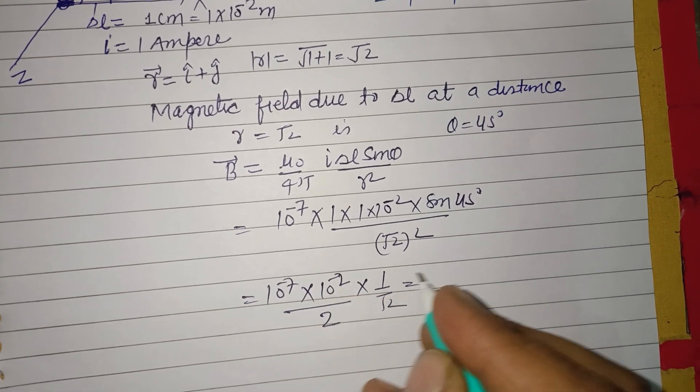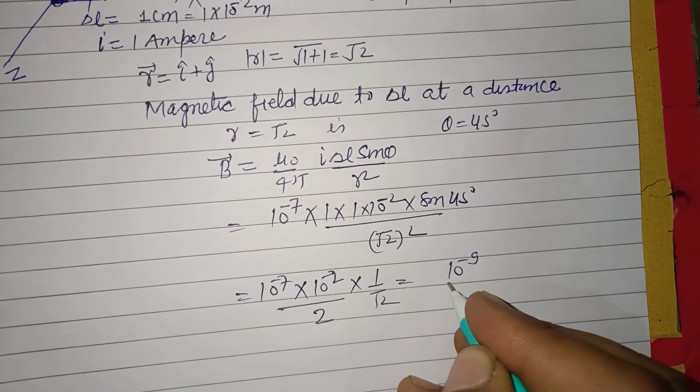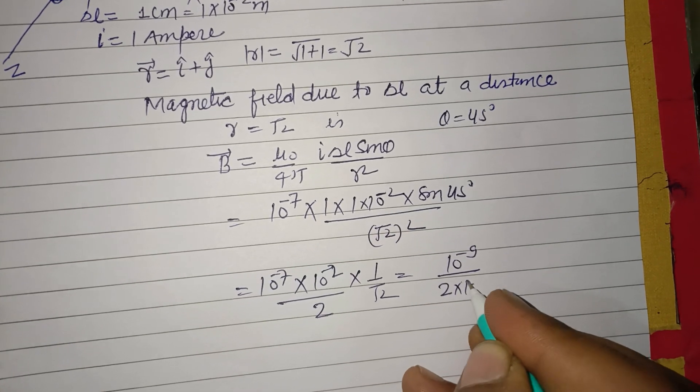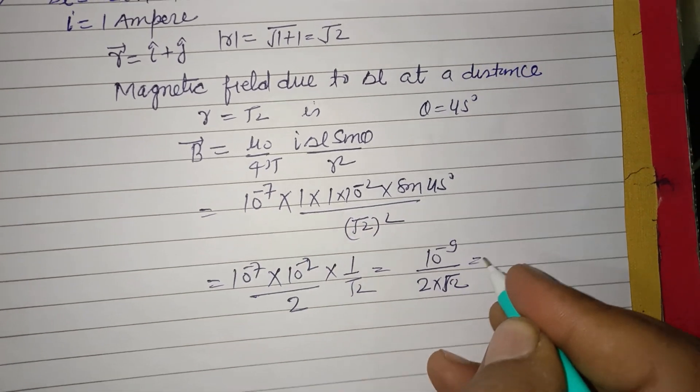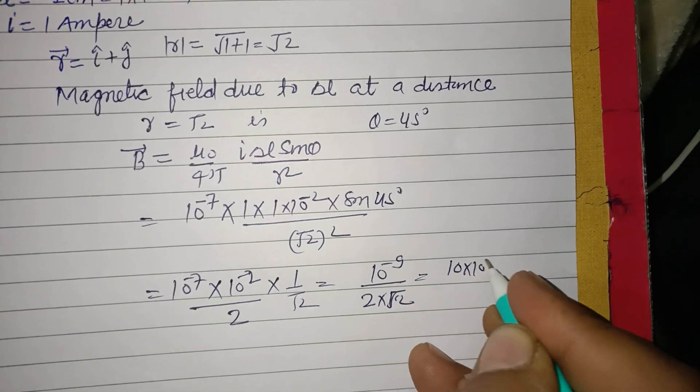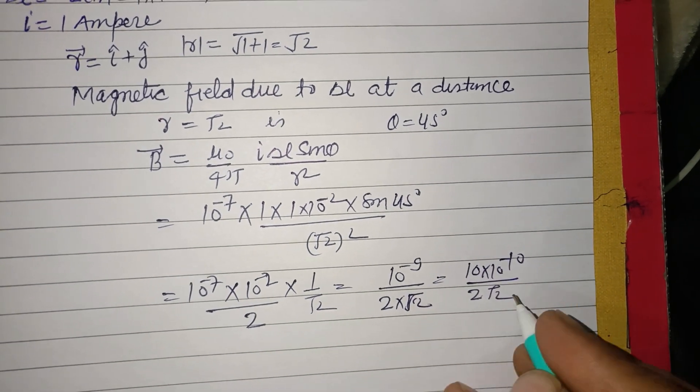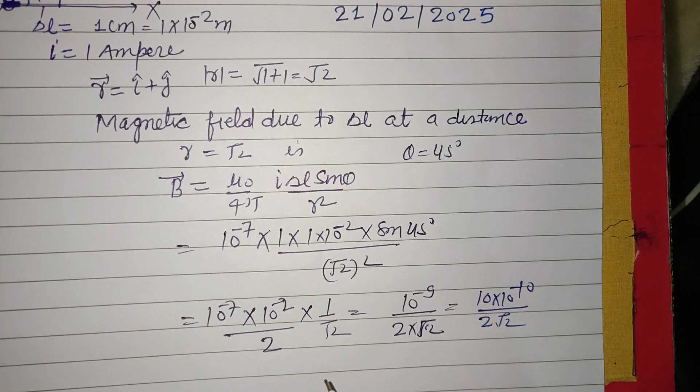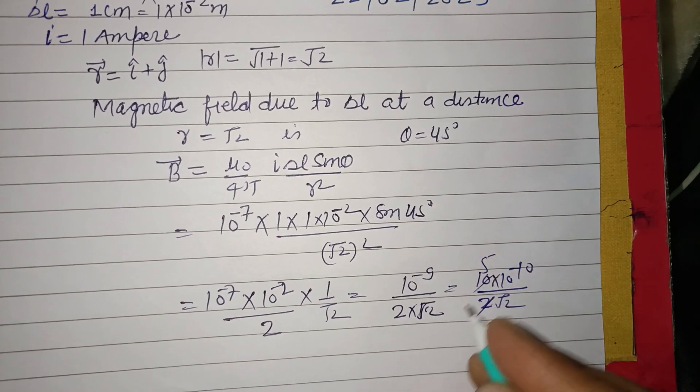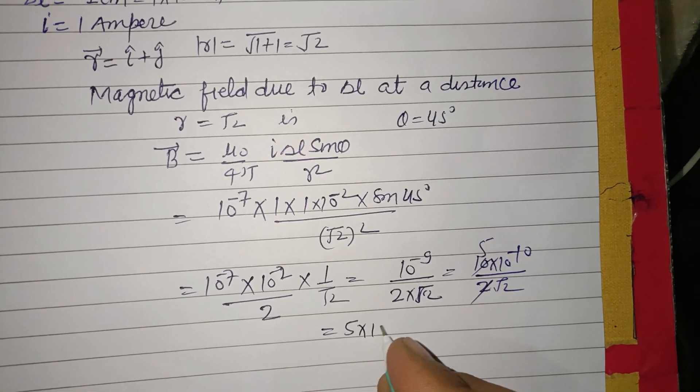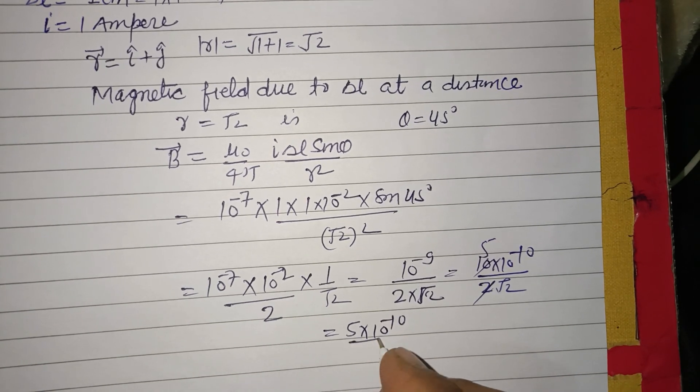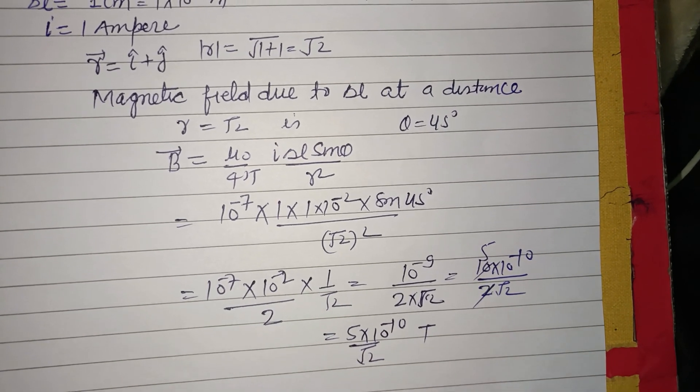This equals 10⁻⁹/(2√2), which we write as 10×10⁻¹⁰/(2√2). Therefore 5×10⁻¹⁰/√2 Tesla is the answer.